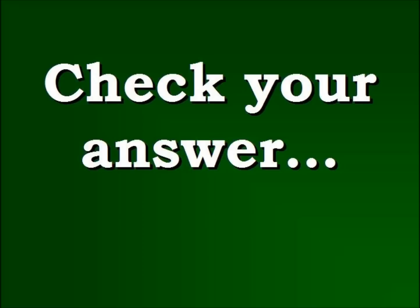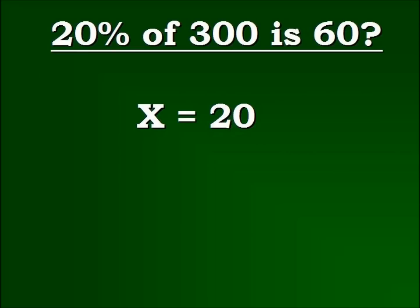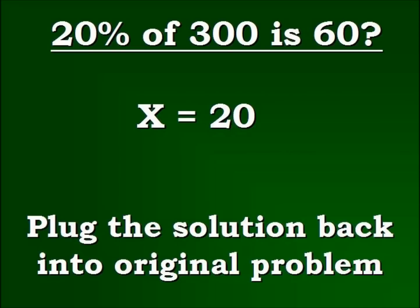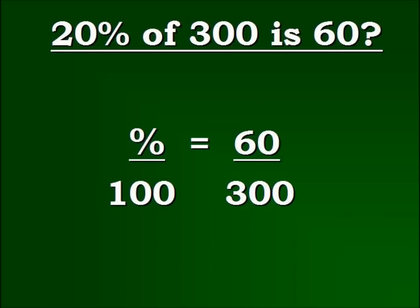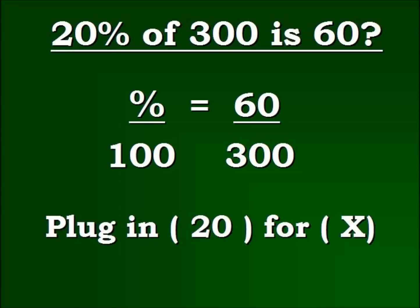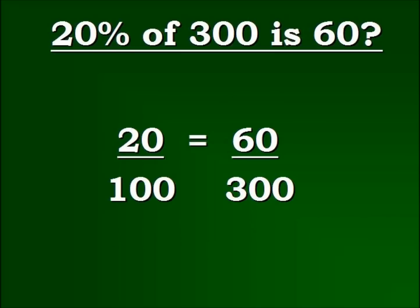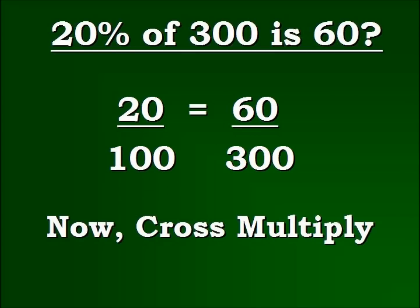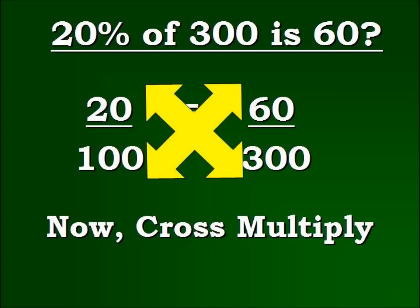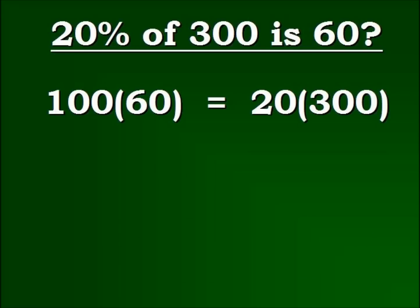Now, let's check our answer. X equals 20. What we're going to do is we're going to plug the solution back into the original problem to see if the equation stays balanced, thus making sure it's correct. We have our original equation. We're going to plug 20 in for X, or where the percent is. Now, we're going to very quickly, again, cross multiply.